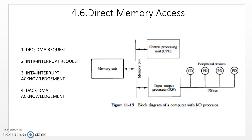In the previous topic we discussed about priority interrupt, and before that we had seen modes of transfer — different types of modes of transfer. There are three different types of data transfer: one is programmed I/O, another one is interrupt-initiated I/O, and the last one is direct memory access. We had discussed the first two methods already, and now we are going to look at direct memory access.